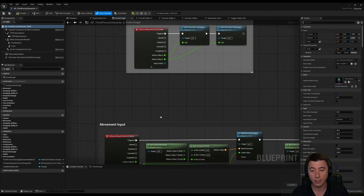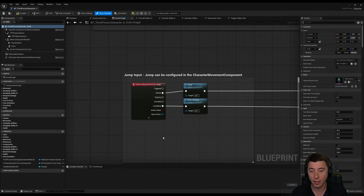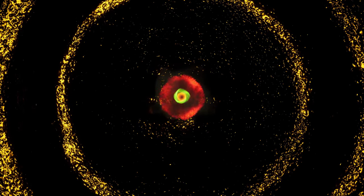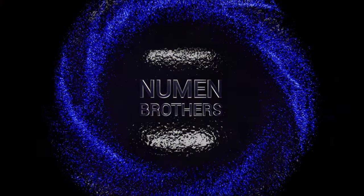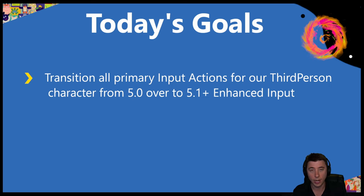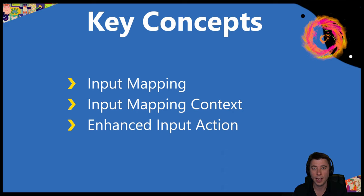In this episode we're setting up enhanced input for every standard UE5 5.0 input and also everything we set up in this series like jump, walk, run, toggle, crouch, and mouse wheel zoom. Welcome to today's episode where we are upgrading our input actions. This episode applies differently depending on whether you started your project on 5.0 or 5.1. The key concepts revolve around setting up enhanced input.